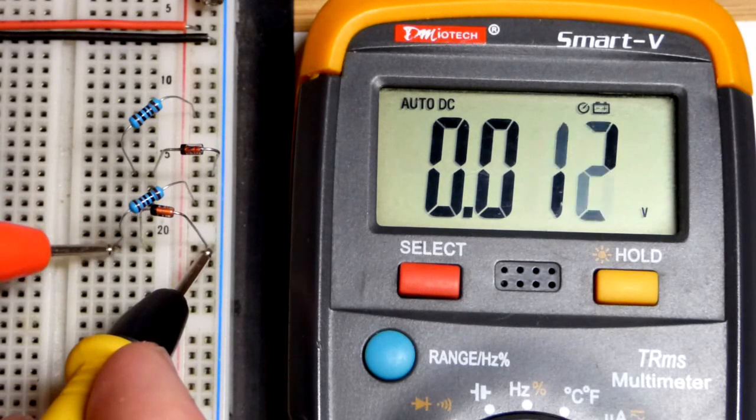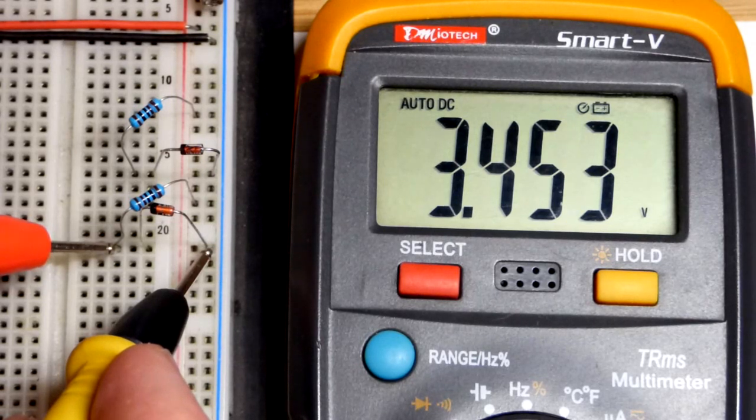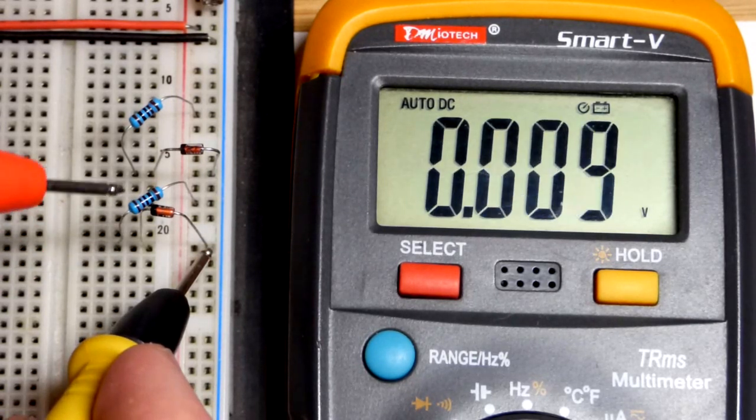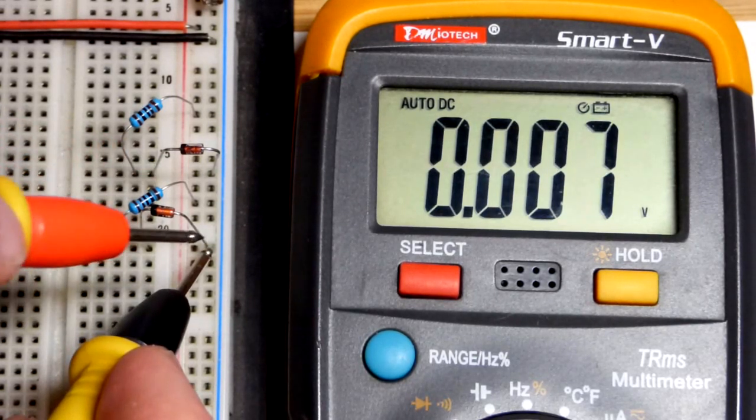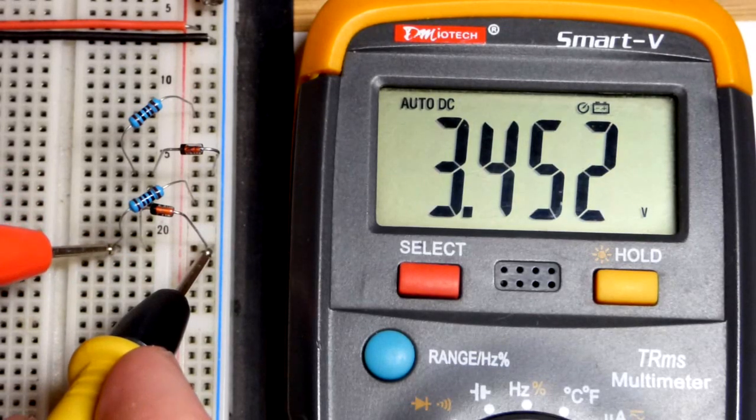Here is the 3.3 volt Zener diode. You can see that it is a little bit higher than 3.3 volts. So we could raise the value of this resistor that's limiting the current through it a bit more. That would drop it down to 3.3.